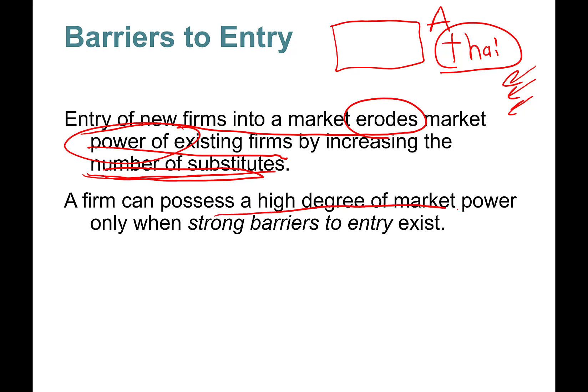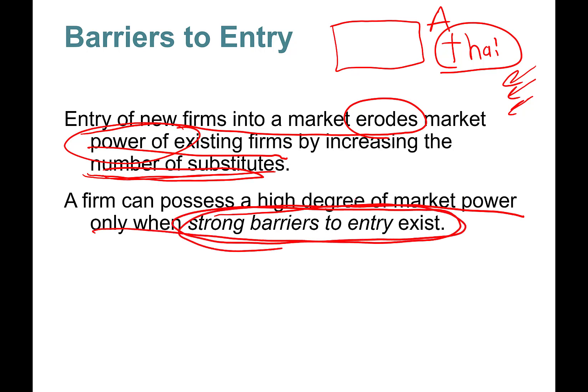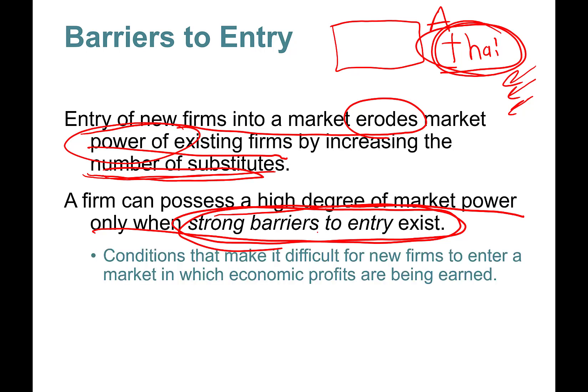A firm can possess a high degree of market power only when strong barriers to entry exist. In the restaurant business there's no high level of market power. Even if I had a very specialized, differentiated restaurant that is not easy to replicate, because the entry barriers are not strong, I'll still never have very strong market power.